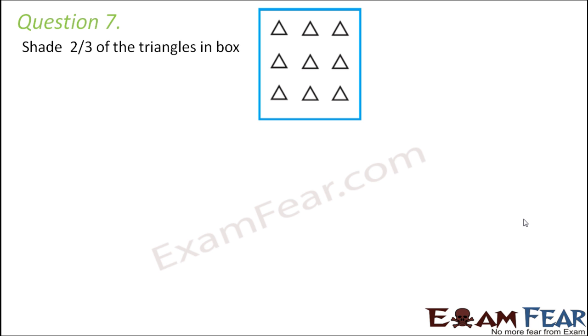Question number 7. Shade 2/3 of the triangles in a box. Now inside this box how many total triangles do you have? So total triangles that we see inside this box is equal to 9. Now we have to shade 2/3 of total triangles. That is 2/3 of 9 which is equal to 2/3 into 9. So this would be 18 divided by 3. So again if you divide it you see 3 into 6 is 18. So this is 6. So therefore we can shade 6 triangles in the box.